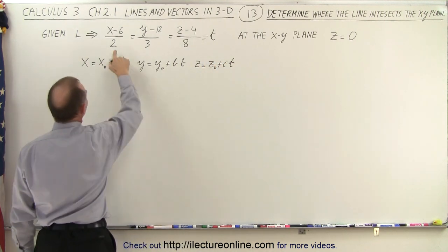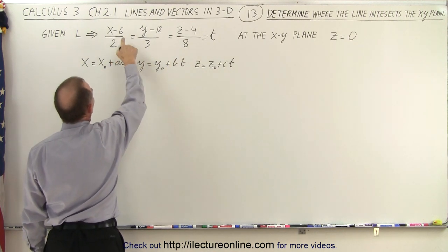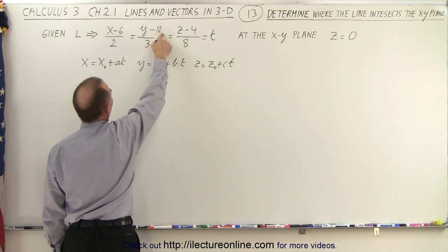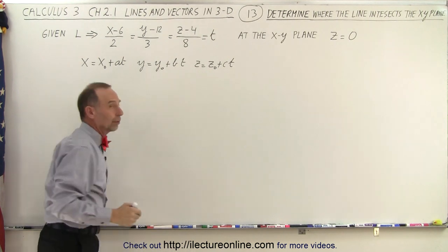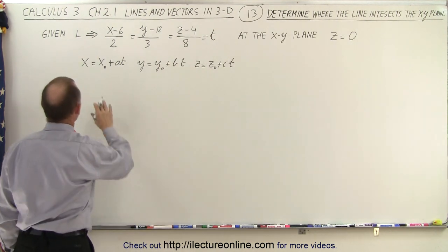Then we realize that a, b, and c are represented by the denominators and x sub 0, y sub 0, and z sub 0 are represented by those numbers. So let's plug those in and see what we get.